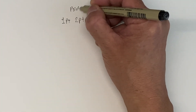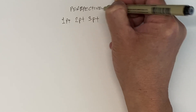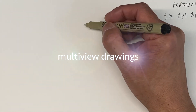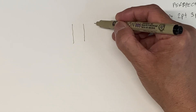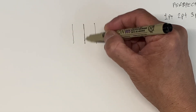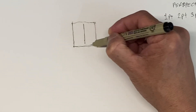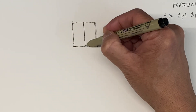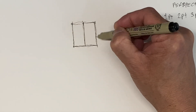Before we get into perspectives, let's do a recap. Orthographic projection involves multi-view drawings such as a plan. In this case I'm drawing a top view — a top view of an A-frame house.